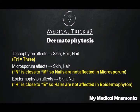Microsporum affects skin and hair but does not affect nail. This can be remembered alphabetically: Microsporum starts with M, and nail starts with N. M is close to N, so nail is excluded — it is not affected in Microsporum.